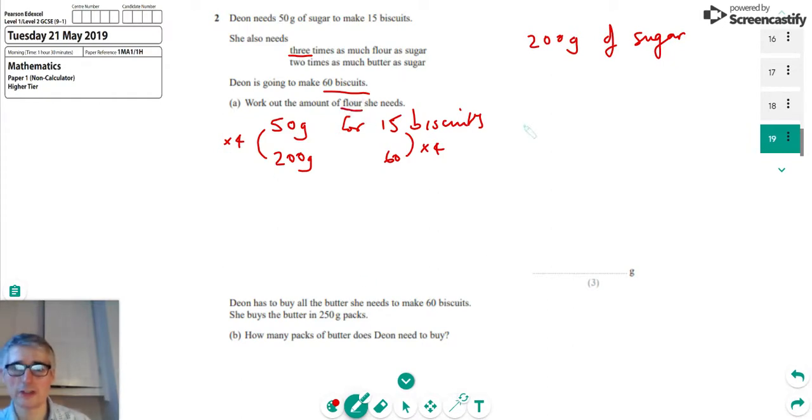Work out how much flour she needs. So she needs three times as much flour, so we just multiply that 200 by three. The flour equals three times 200, which is 600 grams. So that's part A.